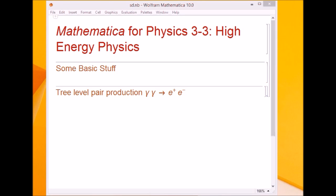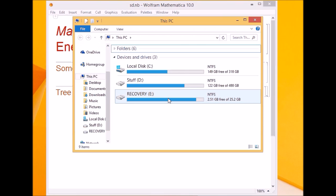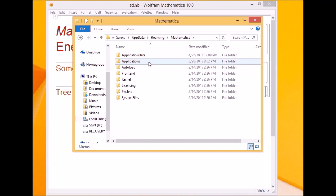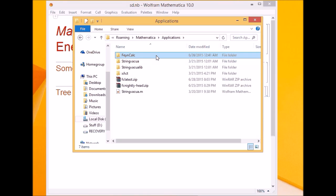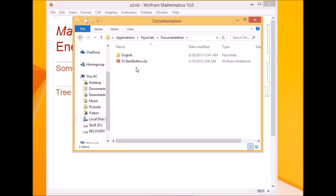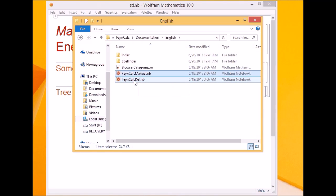FeynCalc has a very good manual which I urge you to go through. The manual is found in the AppData folder where you install the package. So write AppData in your explorer, go to Mathematica, and go to Applications. This is where you had installed FeynCalc. Go into the FeynCalc folder, then go into Documentation, and then go into English.